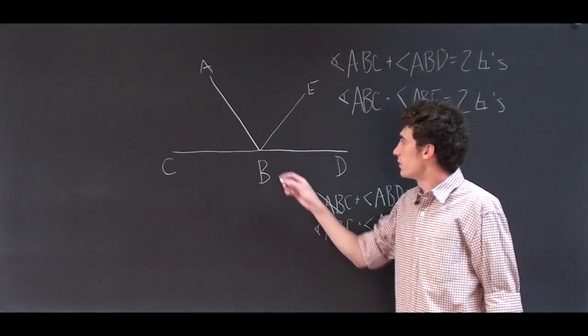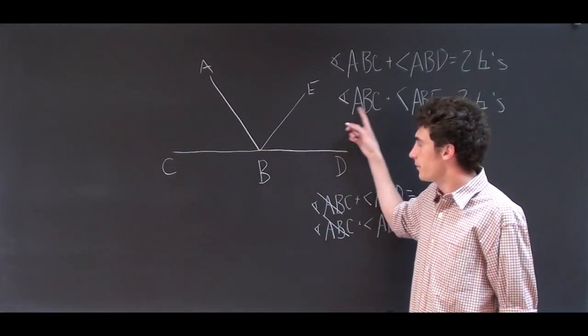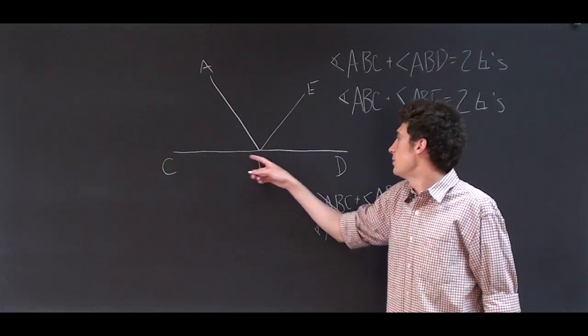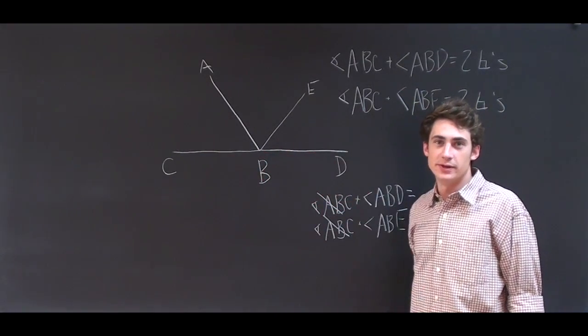Similarly, I can do this with all other lines that can be produced. Therefore, line CB is in a straight line with line BD, QED.